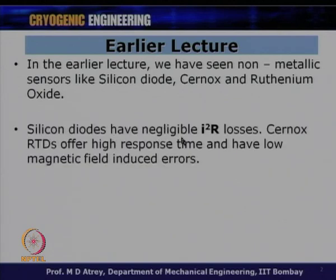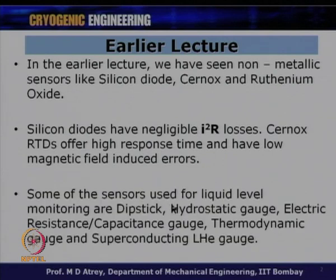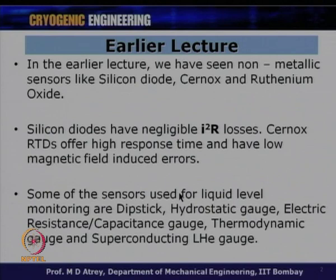Silicon diodes have negligible I²R losses because they carry only a 10 microamp current. Cernox RTDs offer high response time and low magnetic field-induced error, so whenever there is a magnetic field, Cernox is preferred. We also covered liquid level sensors — deep stick, hydrostatic gauge, electric resistance, capacitance gauge, thermodynamic gauge, and superconducting liquid helium gauge — and how they indicate cryogen level.